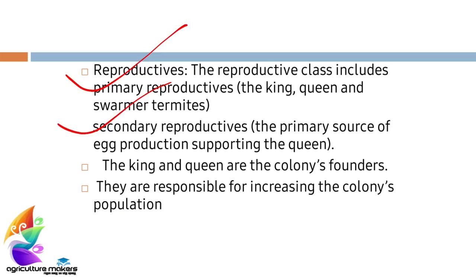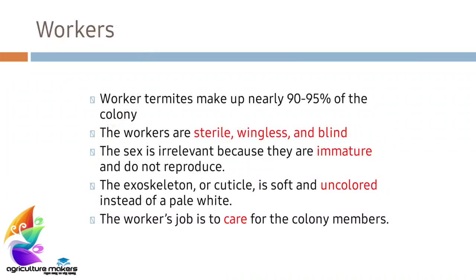The king and queen are the colony's founders and they are responsible for increasing the colony's population. Workers make up nearly 90 to 95 percent of the colony population. They are sterile, wingless, and blind.